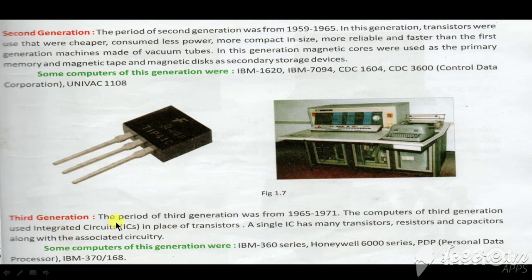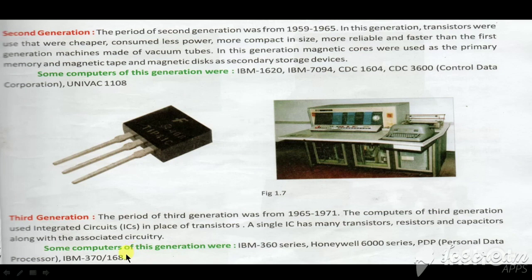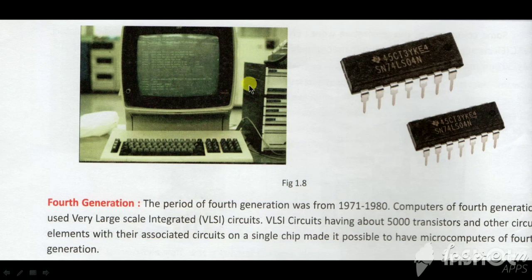Next is the Third Generation. Time period is 1965 to 1971. यानि कि 1965 से 1971 के बीच में जो computer यूज हुए, वह third generation थे। These used electronic circuit IC — Integrated Circuit. तीसरी generation में transistor के जगह IC का प्रयोग हुआ। एक IC में बहुत सारे transistors की power होती थी, along with registers and capacitors. Performance तेज हुआ, size छोटा हुआ, speed और accuracy बढ़ी। Examples: IBM 360 series, Honeywell, and PDP.